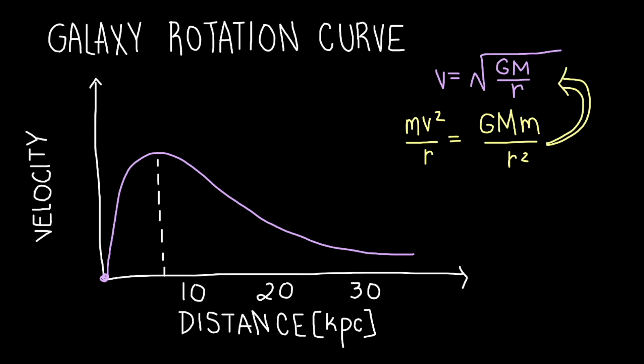Observations, however, reveal that the velocity remains relatively constant across multiple radii. Since G is constant, we assume an invisible mass is compensating for the disparity in velocities between what is expected and what is observed.